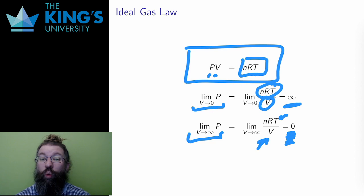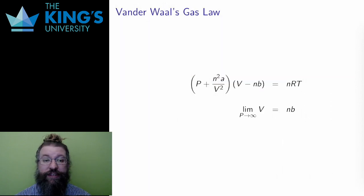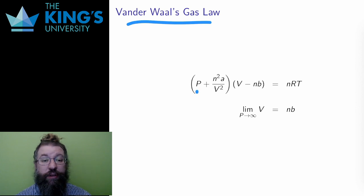The ideal gas law is but one model of the behavior of gases. Not all gases can be reasonably approximated by an ideal law. Another gas law is the Van der Waals gas law. P, V, R, N, and T are the same, but there are two new constants, A and B, which are some positive numbers.